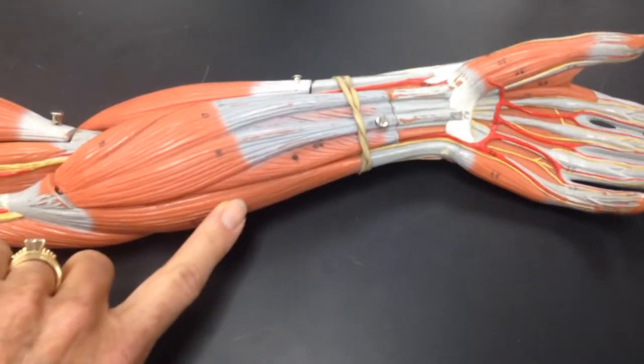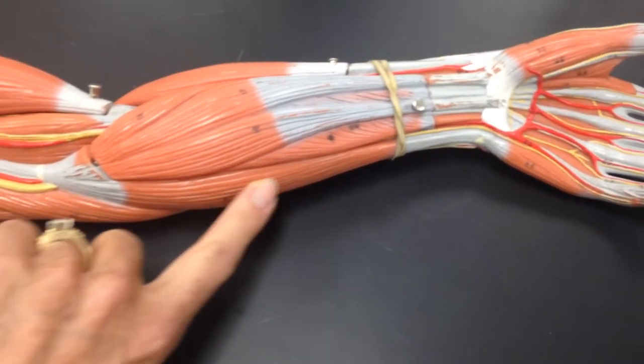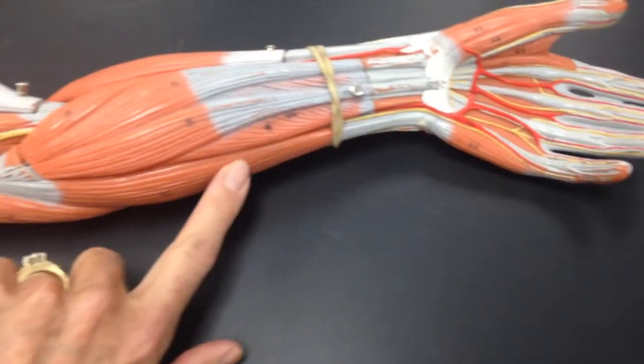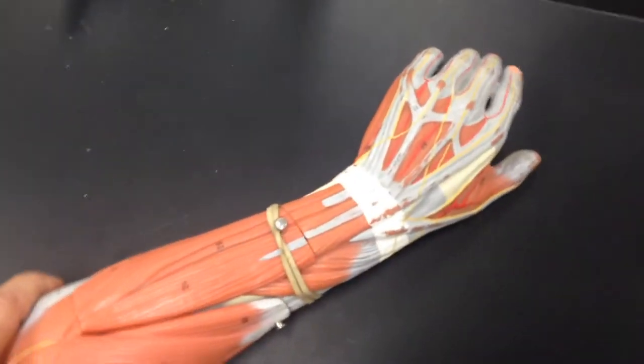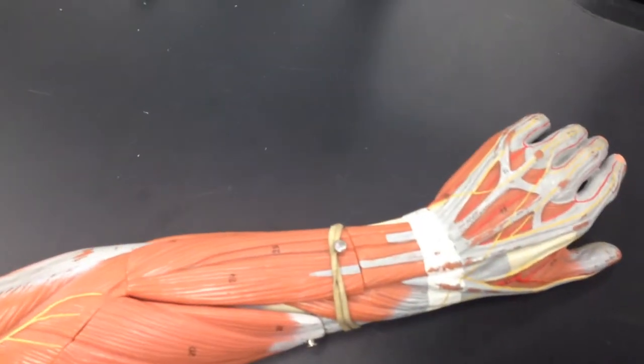On this side, flexing the ulnar side, is the flexor carpi ulnaris. Just follow where it goes and you'll be able to find it. This side has all of the extensors.